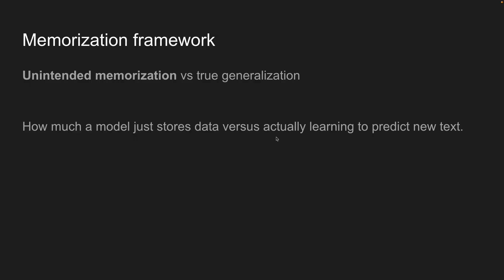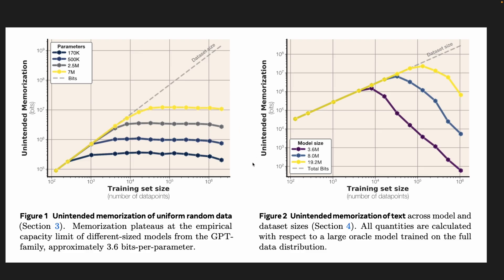What about the memorization framework — unintended memorization versus true generalization? How much does a model just store data versus actually learning to predict the next token? Now, there's a figure showcasing the memorization of text across different model sizes and number of data points. What's interesting is that for a 3.6 million parameter model, the training data has less effect on how the model retains information.